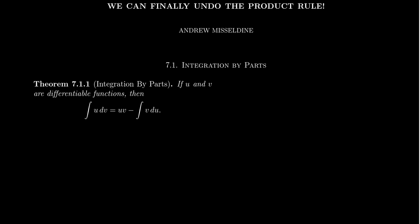With the product rule, let's say we have two functions u and v, functions of x. If we take the derivative of u times v with respect to x, the product rule tells us from calculus 1 that d(uv)/dx equals u dv/dx plus v du/dx. This is the product rule.